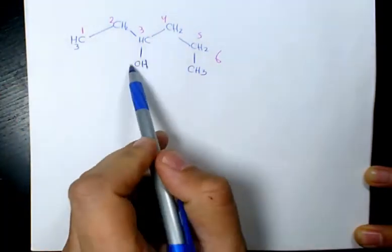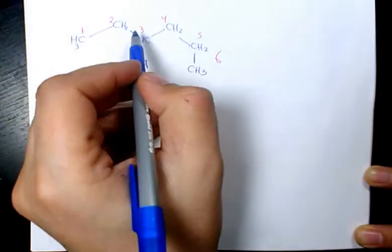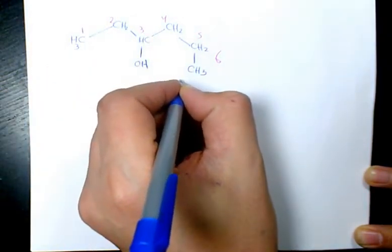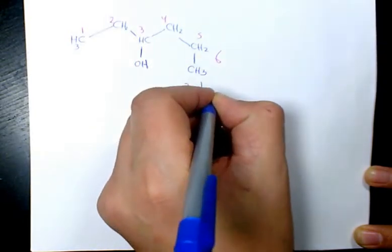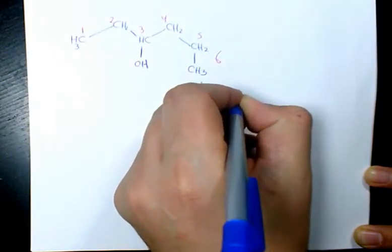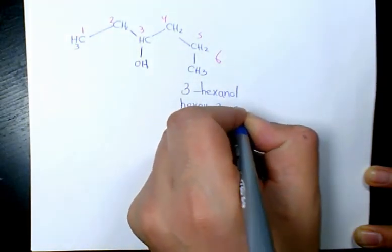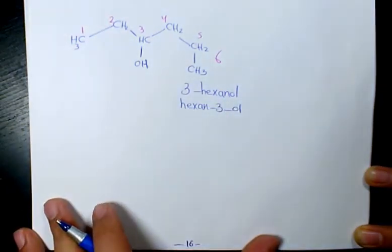So the hydroxyl group is sitting on the third carbon. Then the name of this organic compound will be 3-hexanol or hexan-3-ol. These are two different names for this organic compound. I hope you enjoyed